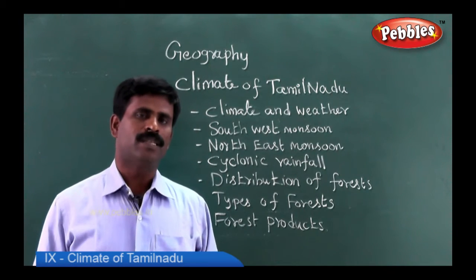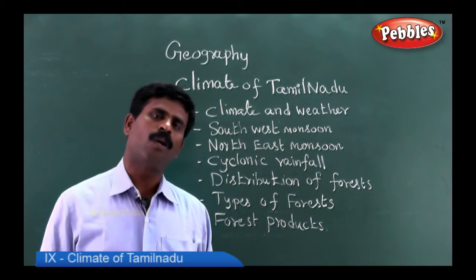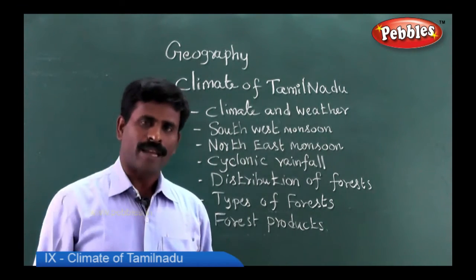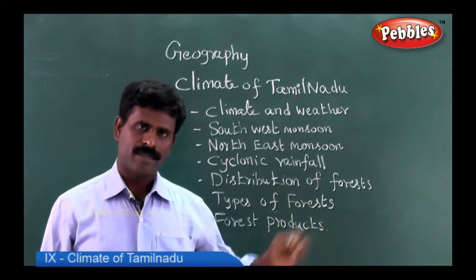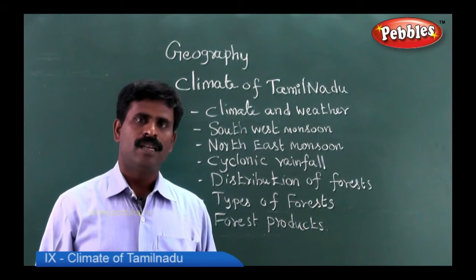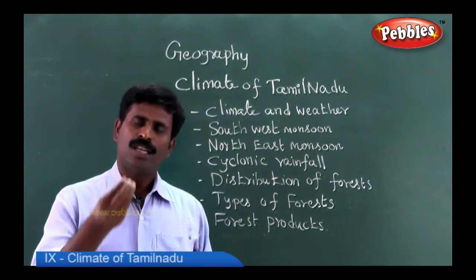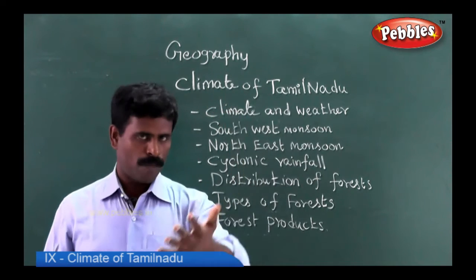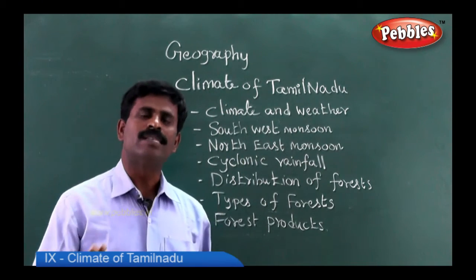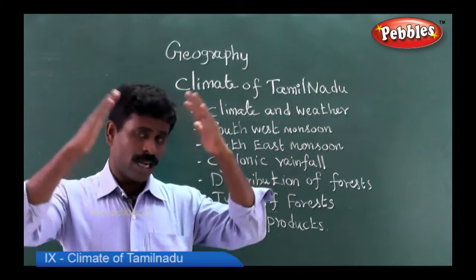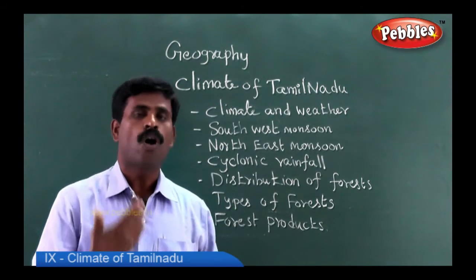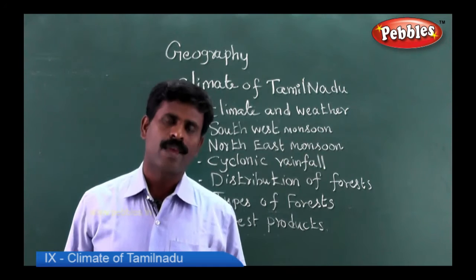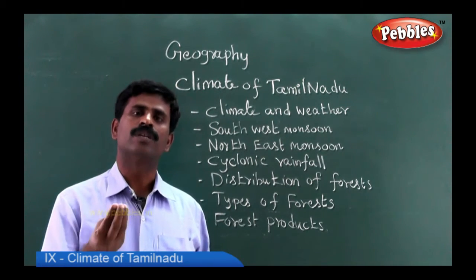What is climate and what is weather? The sum total of weather conditions over a large area for a long time is called climate, whereas the state of the atmosphere of a particular area in a short time is called weather. For example, if it is cloudy in your place today, we say the weather is cloudy. But the general climate of Tamil Nadu is hot. Climate has a duration of over 30 years, whereas weather has a duration of a single day.